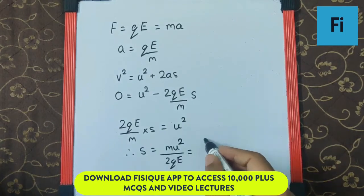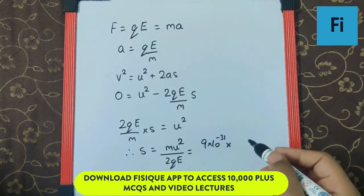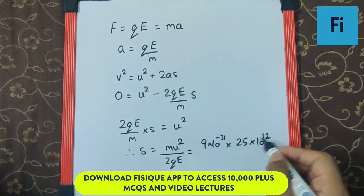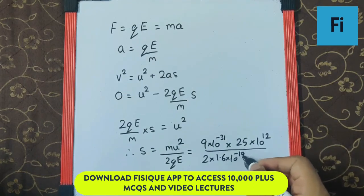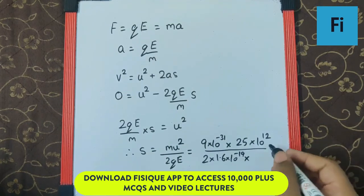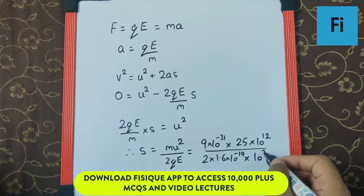The mass is 9 × 10^-31 kg. The speed is 5 × 10^6, squared is 25 × 10^12, upon 2 into. The charge is 1.6 × 10^-19, and the electric field intensity is 10^3 N per coulomb.